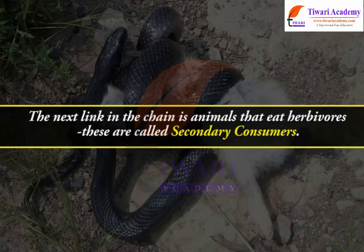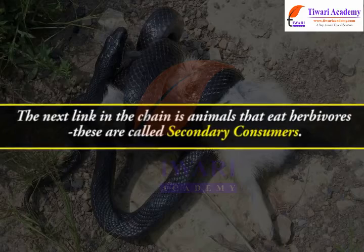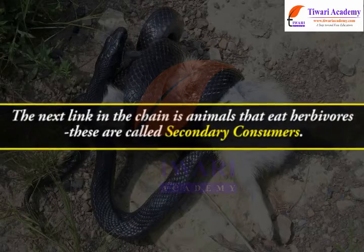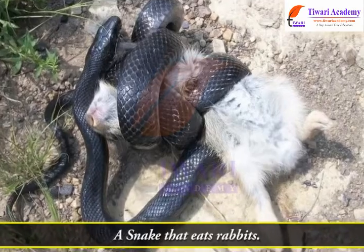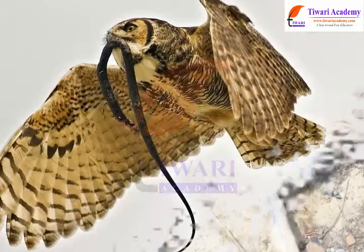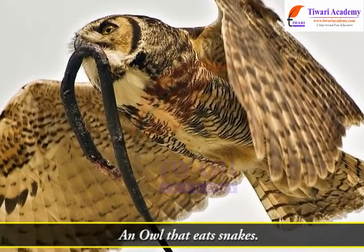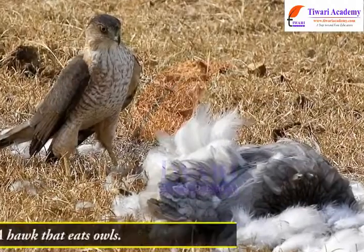The next link in the chain is animals that eat herbivores — these are called secondary consumers. An example is a snake that eats rabbits. In turn, these animals are eaten by larger predators called tertiary consumers, such as an owl that eats snakes. Tertiary consumers are then eaten by quaternary consumers, such as a hawk that eats owls.